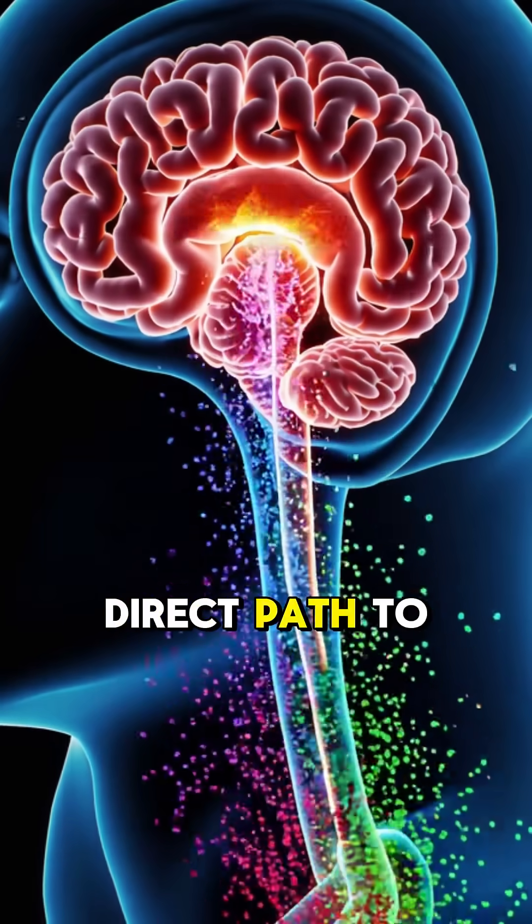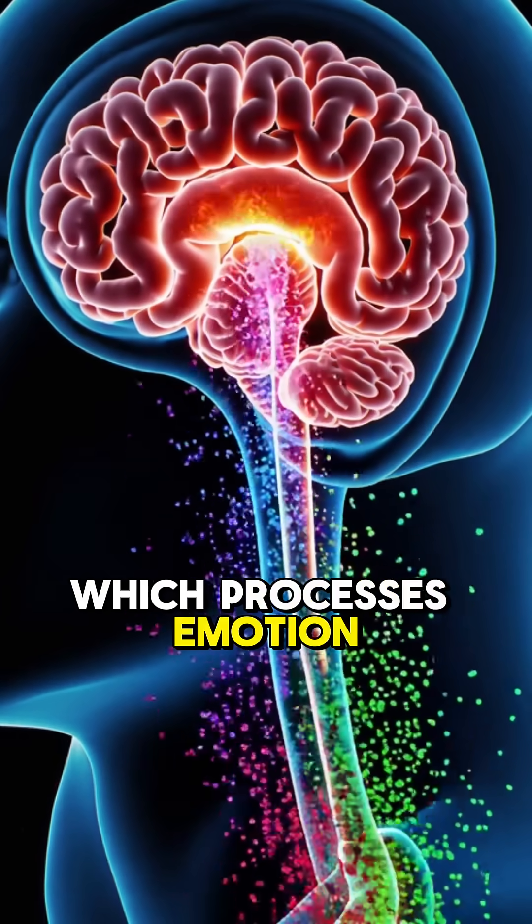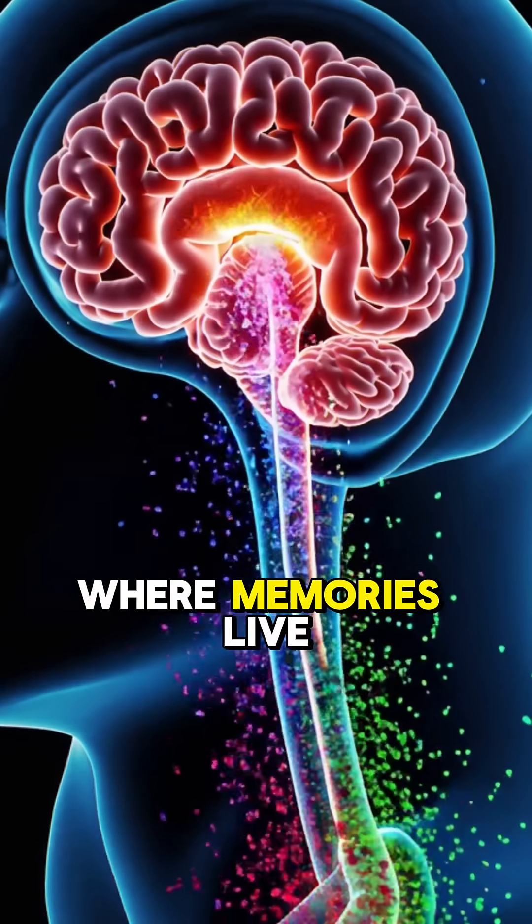Instead, it takes a direct path to the limbic system, hitting the amygdala, which processes emotion, and the hippocampus, where memories live.